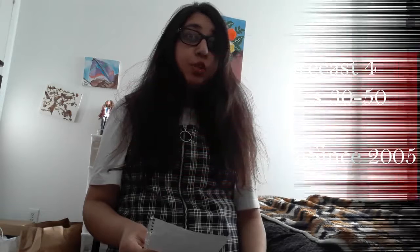The fourth trend is that 70% of working women with kids ages 30 to 59 are married, as of 2005, and there was a decrease then, but by 2011 there was an increase.